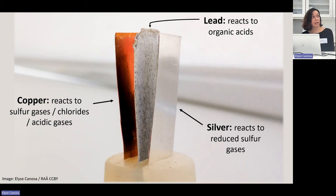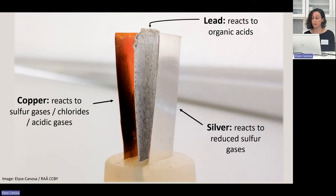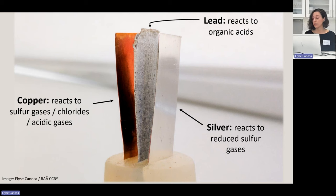At room temperature and moderate relative humidity — typical of museums and other cultural heritage environments — such types of corrosion may take a very long time to become visible. Because of that, this test is performed at high temperature and high humidity. The high temperature helps to accelerate the corrosion process and to increase the number of volatile molecules emitted from the material. The addition of water helps to increase the relative humidity, since some corrosion reactions require elevated humidity to occur.